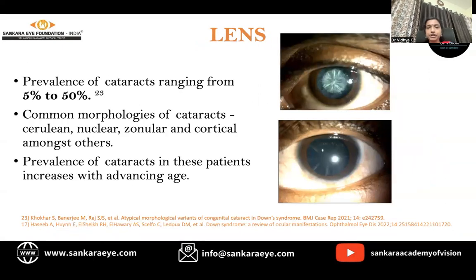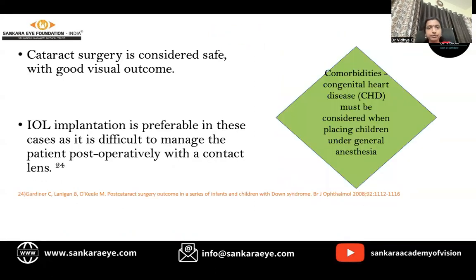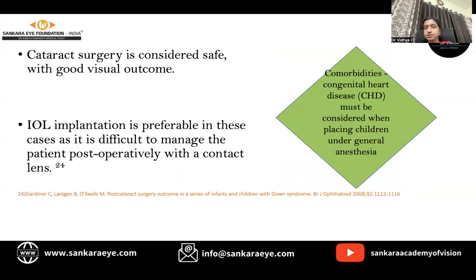The prevalence of cataracts in these children ranges from 5% to 50%, with common types being zonular cataract, nuclear, cortical, and cerulean cataracts. The prevalence increases with advancing age. Cataract surgery is considered safe with good visual outcomes. IOL implantation is preferable as it is difficult to manage these children postoperatively with contact lenses. Comorbidities like congenital heart disease must be considered before planning general anesthesia.